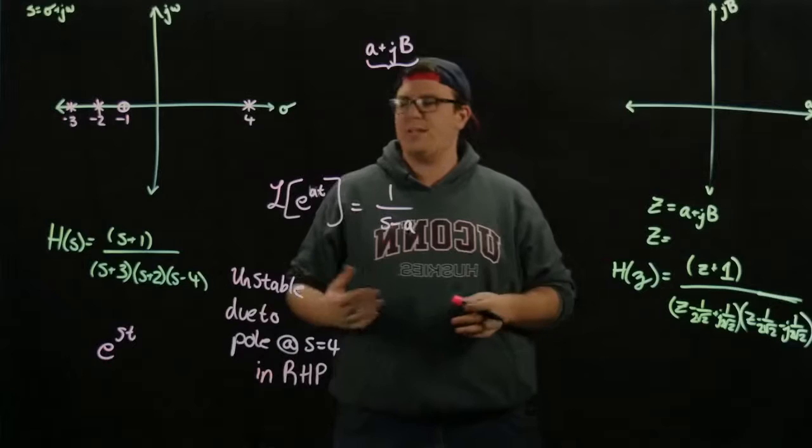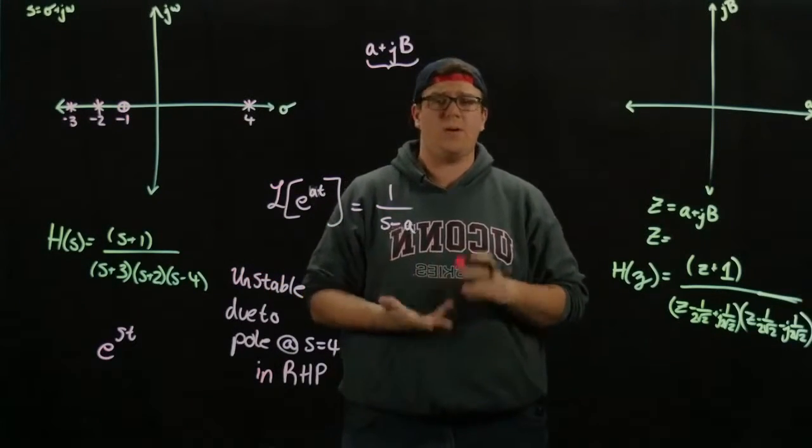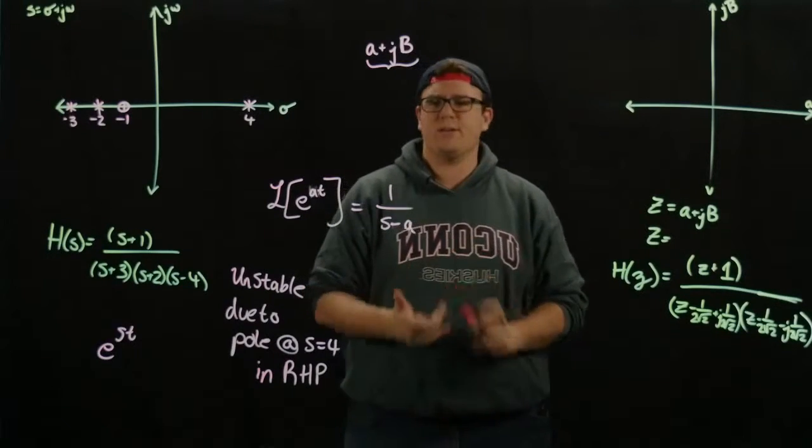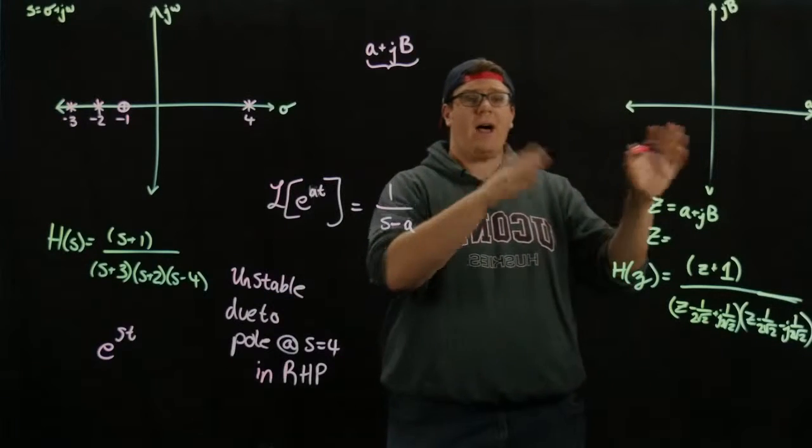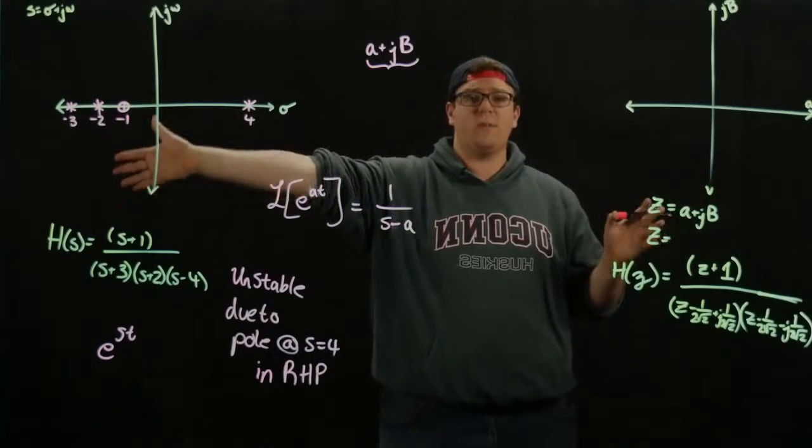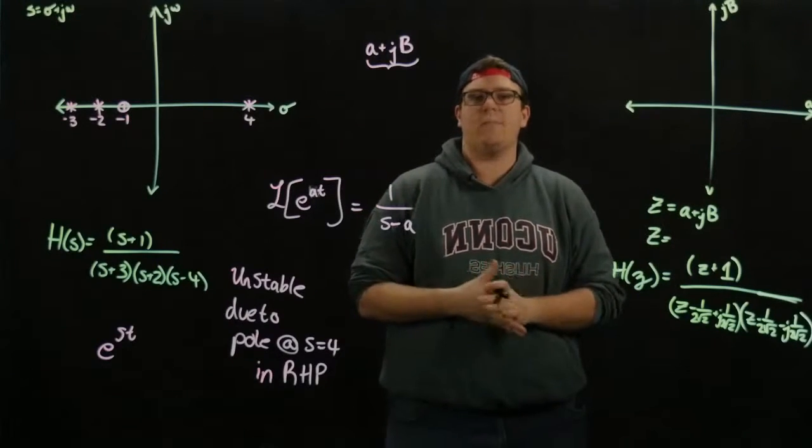There are a bunch of other ways to tell stability if you can't, but we go over those in other videos, such as Routh-Hurwitz and Nyquist criterion and stuff like that. So very quickly, I'm going to talk about how to take our notions from the S plane and go over to the Z plane, which we use for discrete time transfer functions.